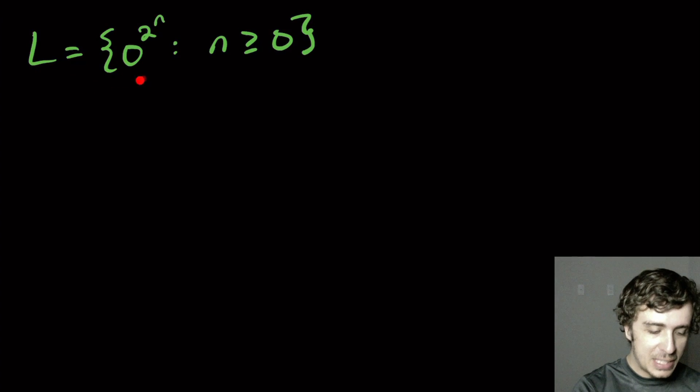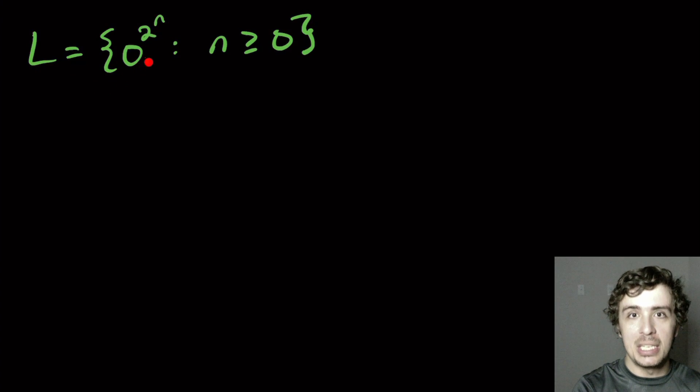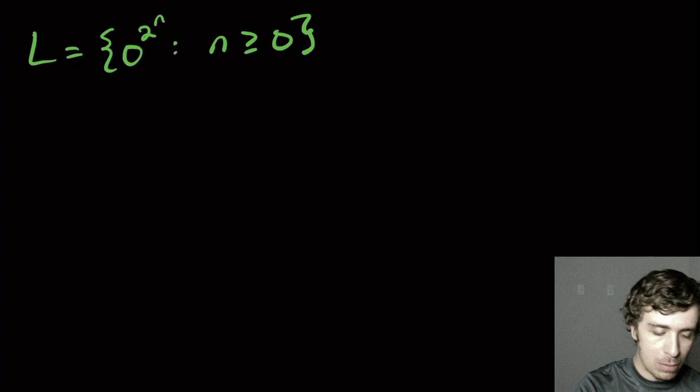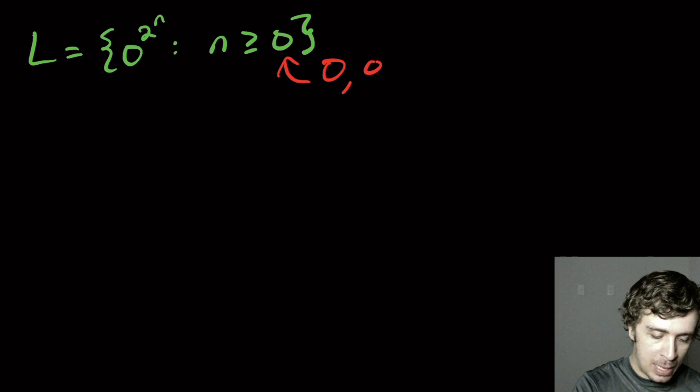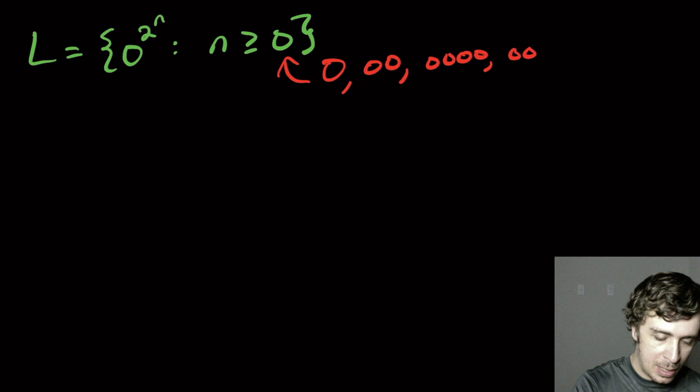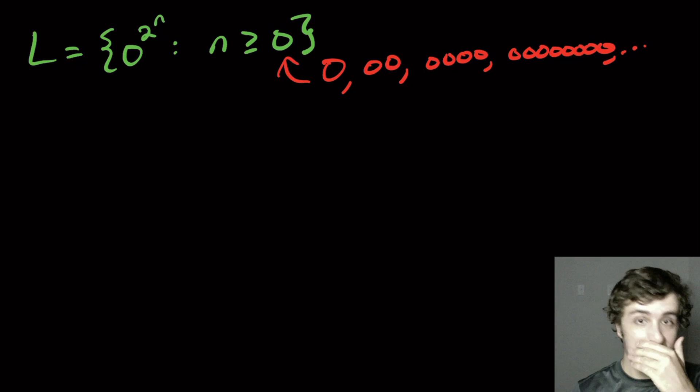So I want to prove that this language, which is the set of all strings of zeros that are a perfect power of two for any power of two that you want, is not a regular language. For example, in here we have a single zero, which corresponds to when n is zero, two to the power of zero is one. So that's one zero. We also will have two zeros and then four zeros and then eight zeros and so on. So I want to convince you that this is not a regular language.